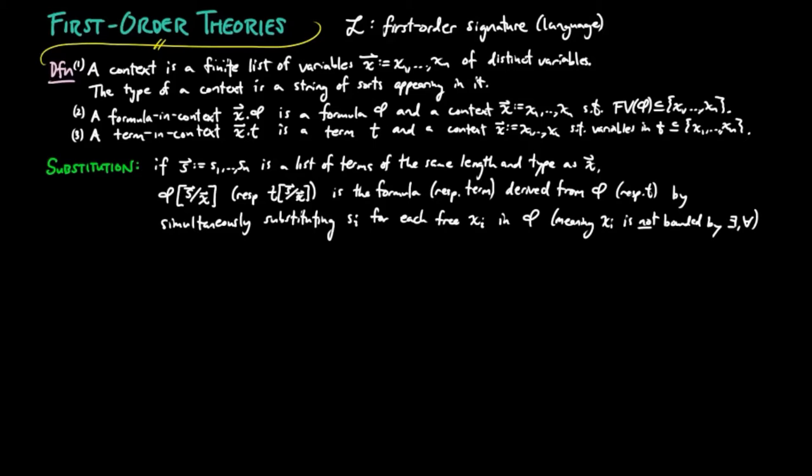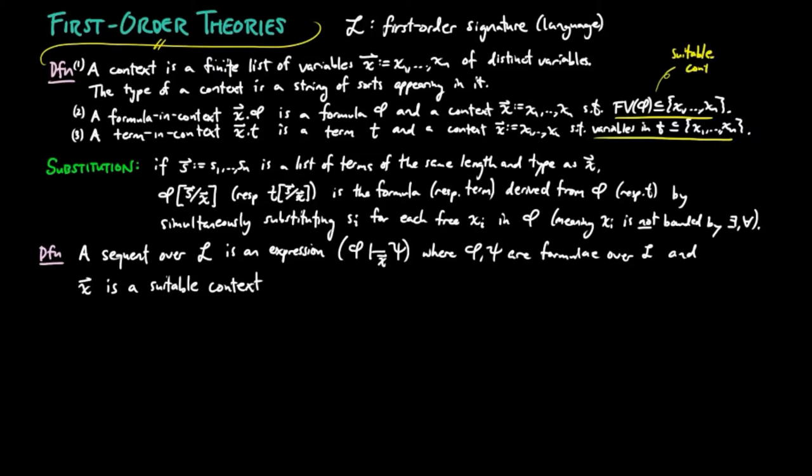Next we define the content of an axiom system, called sequence. A sequence over L is an expression phi turnstile psi, with a lower script x, where phi and psi are formulae over L, and x is a suitable context for phi and psi, meaning the free variables of phi and psi are contained in the set x1 to xn.